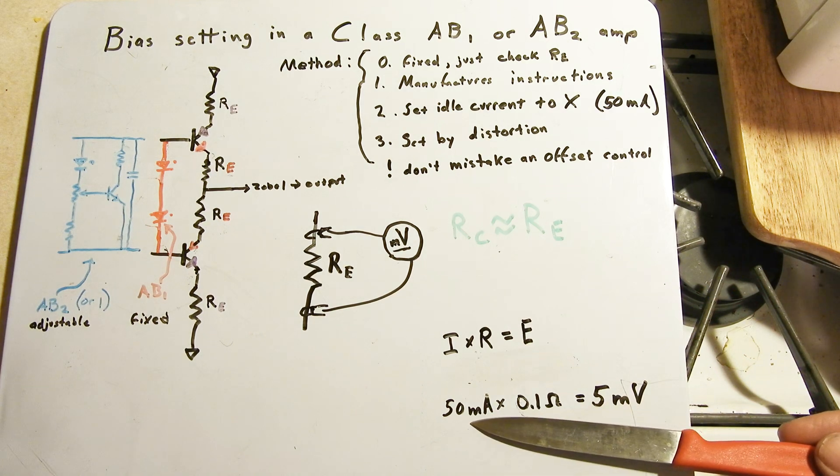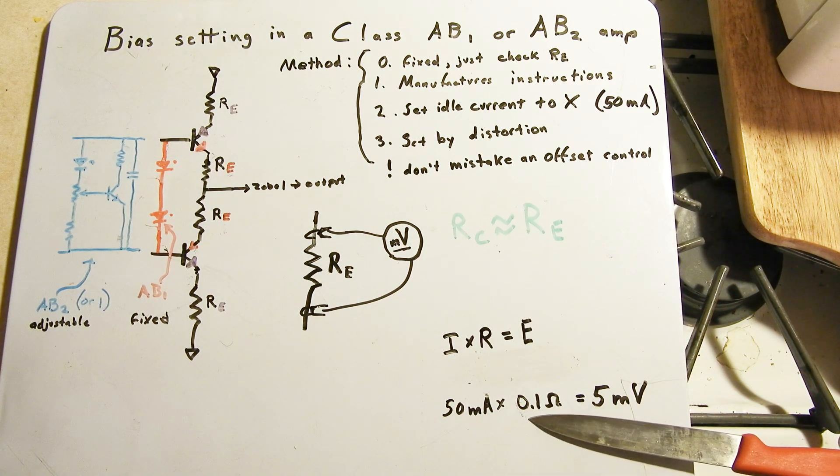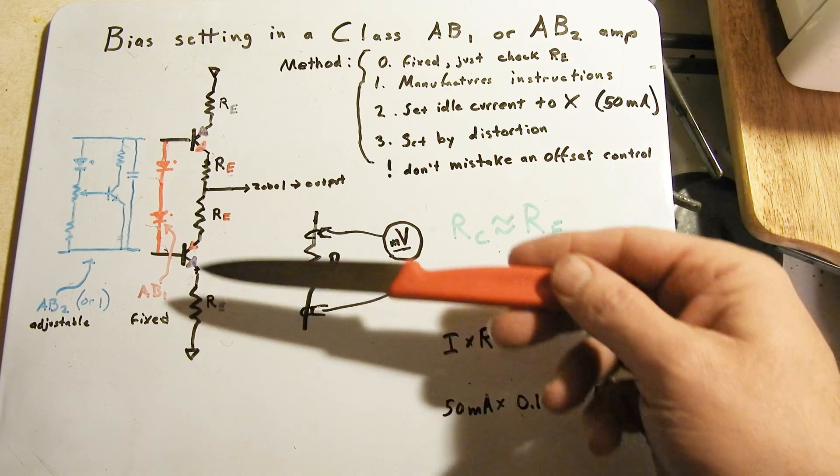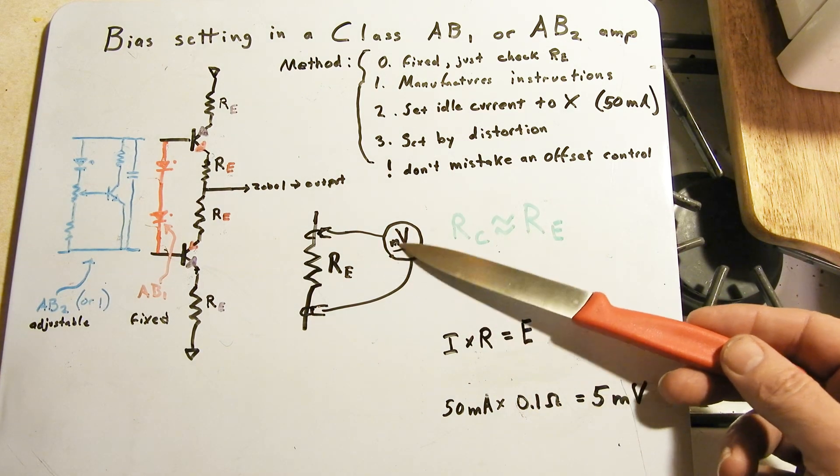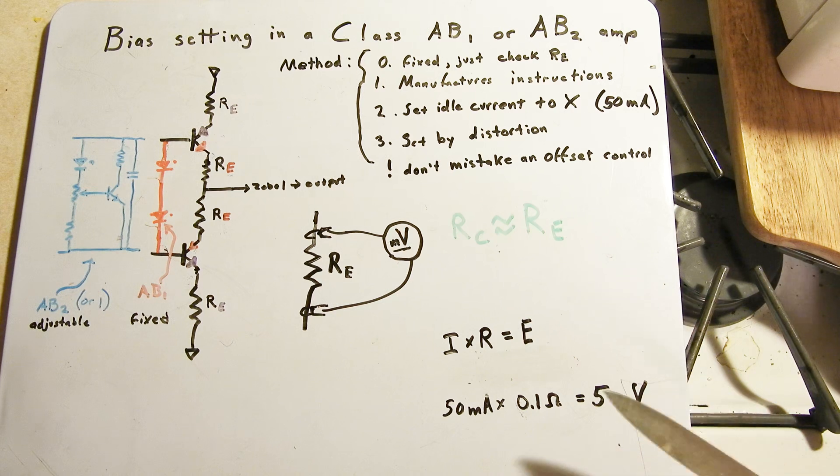If I wanted 50 milliamps of bias current and I have a 0.1 ohm emitter resistors, then 50 milliamps times 0.1, 5 millivolts. I'm looking for 5 millivolts on this meter. And that's my bias.